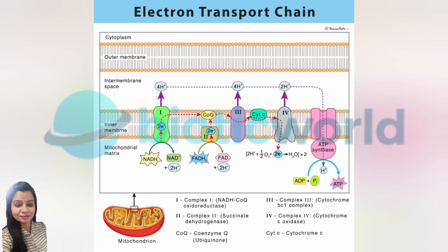This is why oxygen is essential for aerobic respiration. As electrons flow through the complexes, protons are pumped into the intermembrane space, creating a proton gradient and electrochemical potential. This gradient powers ATP synthase, an enzyme that acts like a turbine. Protons flow back into the mitochondrial matrix through ATP synthase, and the energy from this flow drives the conversion of ADP and inorganic phosphate into ATP. For each NADH molecule, around 3 ATP molecules are produced, while for each FADH2, about 2 ATP molecules are generated.